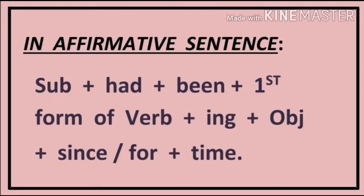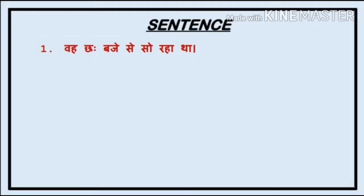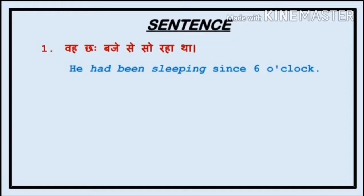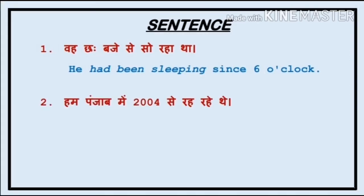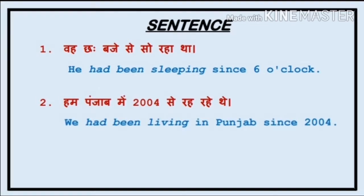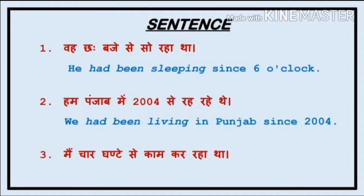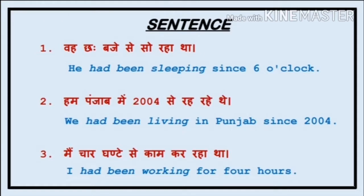In affirmative sentence, the format is: subject + had been + first form of verb + ing + object + since or for + time. Since or for ka prayog maine present perfect continuous tense mein explain kiya hai; is video ka link description mein diya hai, aap is video ko ek baar avashya dekhiye. Let's have a look at a few sentences. मैं चार घंटे से काम कर रहा था. I had been working for four hours.